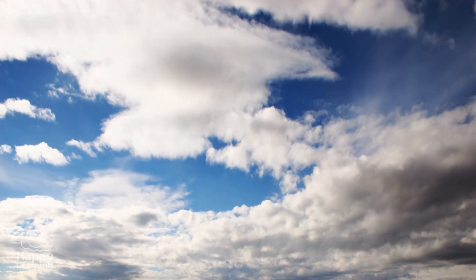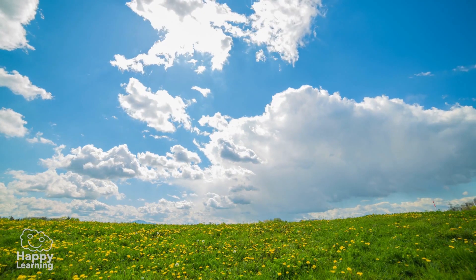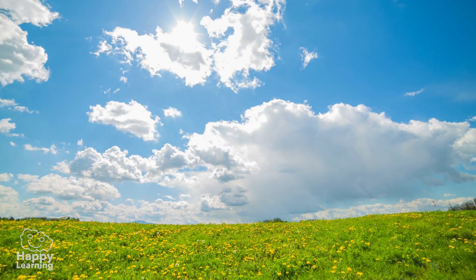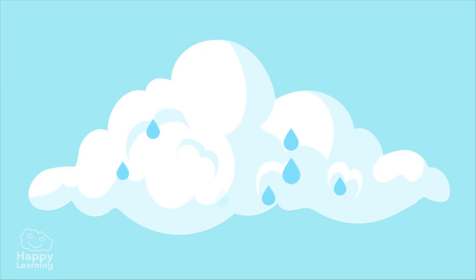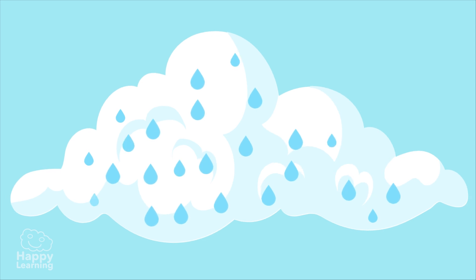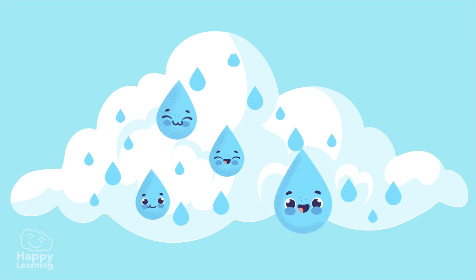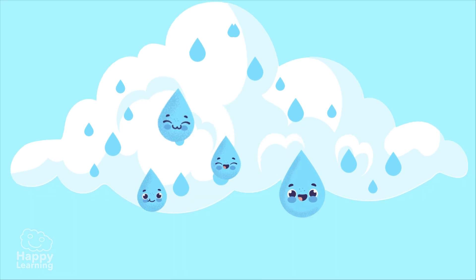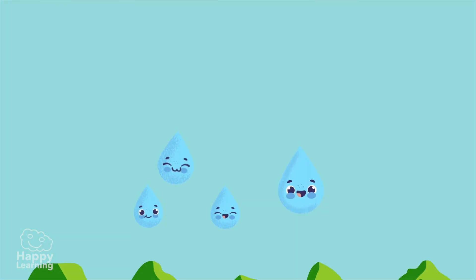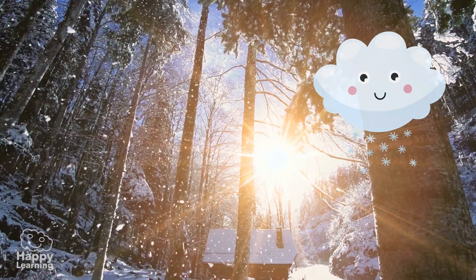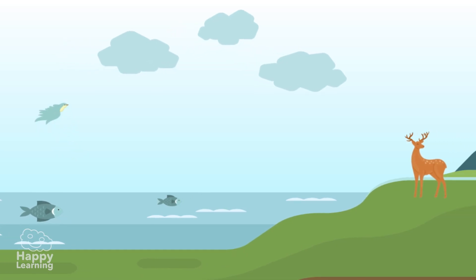Once the water has condensed and turned into a cloud, it continues its amazing journey by being blown by the wind, traveling from one place to another. Clouds are actually tiny little drops of water suspended in the air, but when the clouds grow they collect more and more water. These water drops crash into each other and become bigger drops. Then at some point they end up falling to the ground in the form of rain or even snow. This stage of the water cycle is called precipitation.